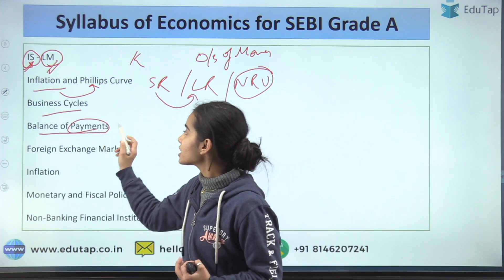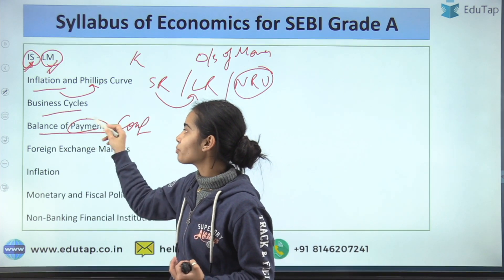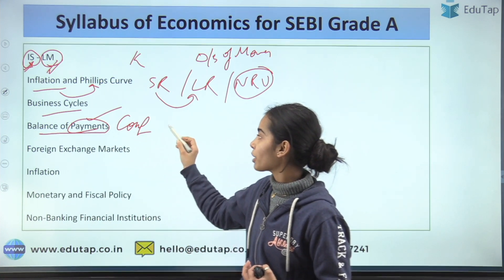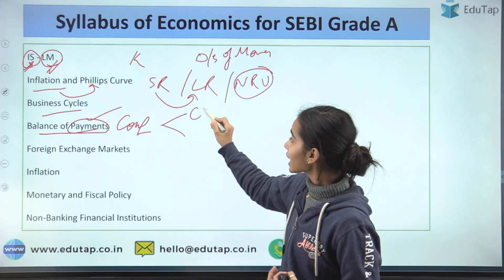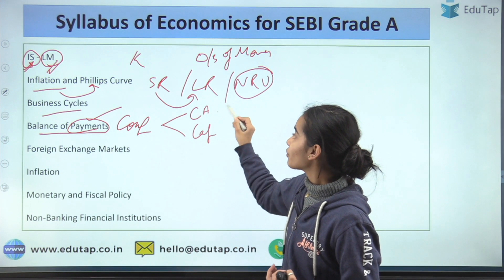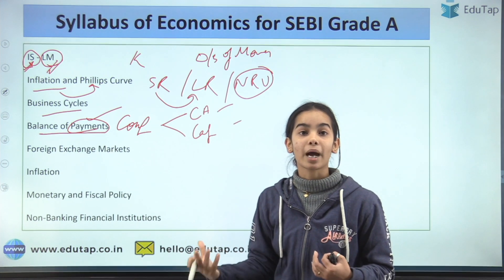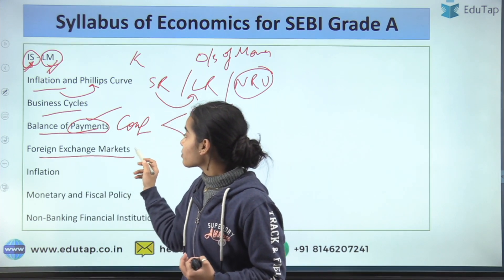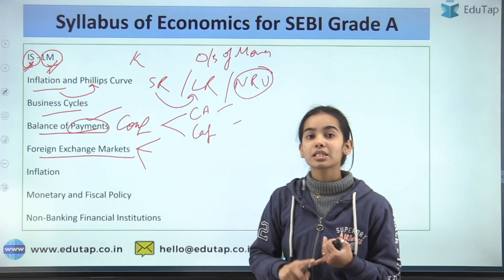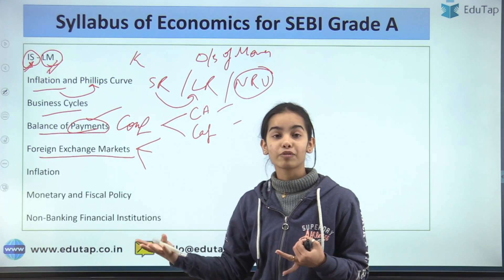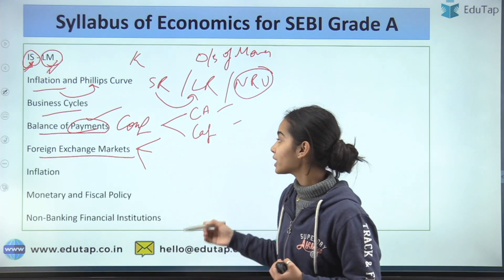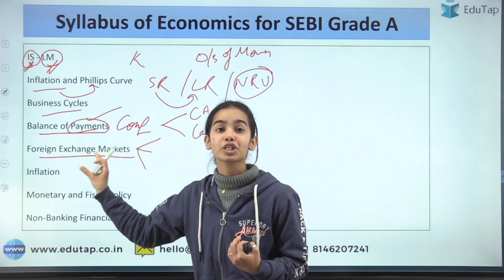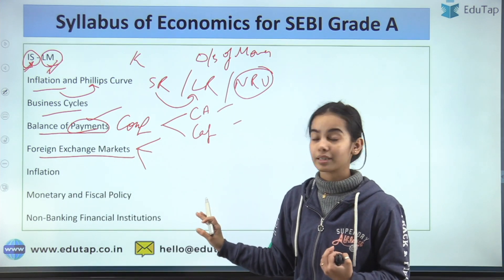Then the balance of payments. Study the components: the current account and the capital account, what falls under each, and errors and omissions. For exchange markets, study the different exchange rate regimes: flexible rate, floating rate, managed floating rate, and fixed exchange rate, and how the market exchange rate is determined.